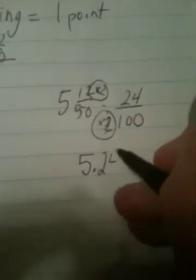24 hundredths points by throwing for 262 yards. That's how I write it as a decimal.